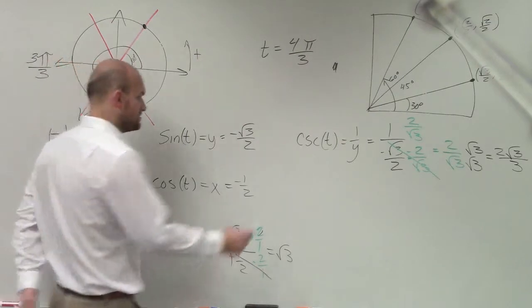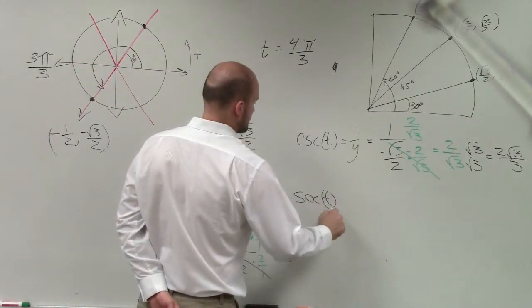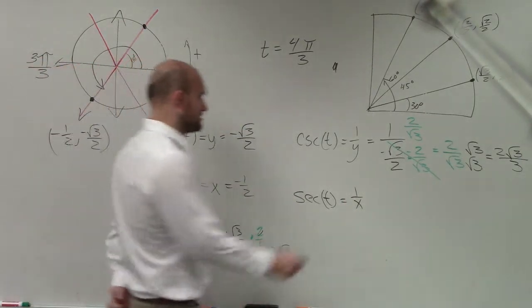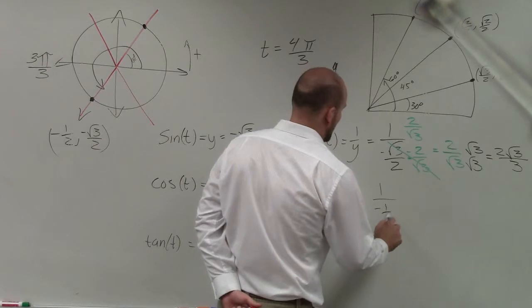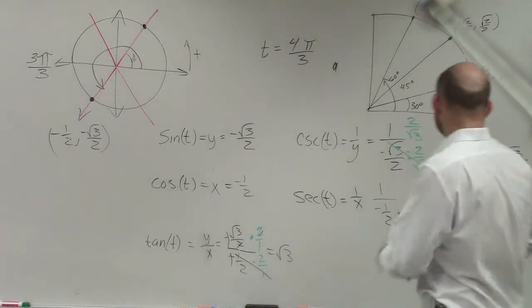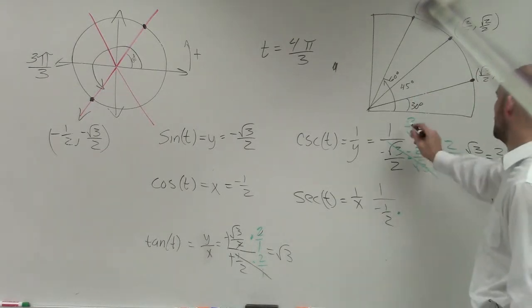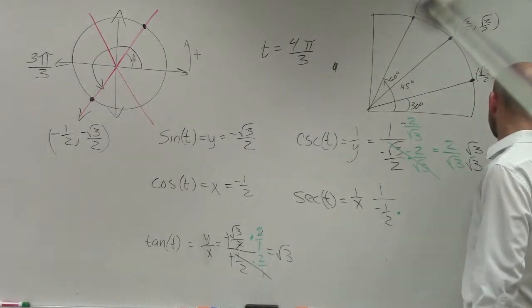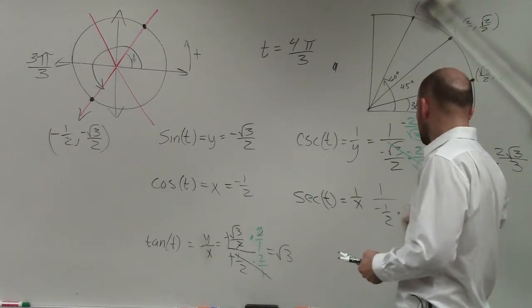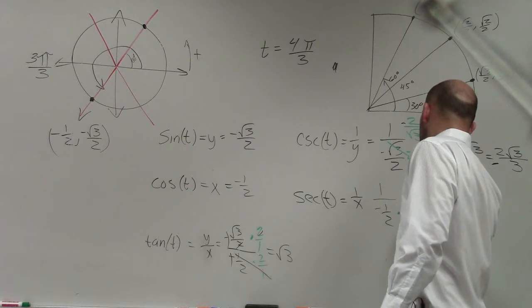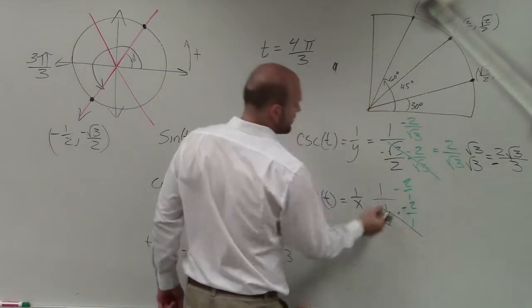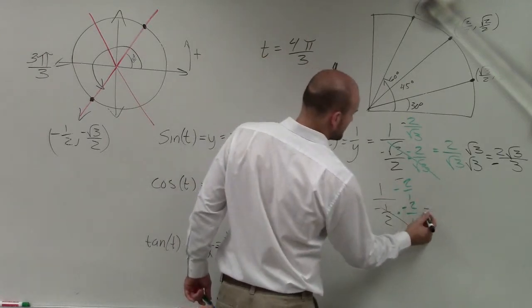Now we go to cosine. The reciprocal of cosine is the secant function, which is 1 over x. For that one, we're just going to have 1 over -1/2. We have to multiply by the reciprocal. So I multiply by -2 over 1. Therefore, that goes to 1, and that's just going to become -2.